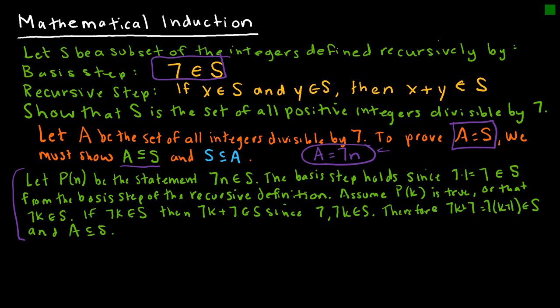I'm going to assume P(k) is true, which means 7k belongs to S. If 7k is an element of S, then 7k + 7 is an element of S, because 7 and 7k are both elements of S. Therefore, 7k + 7, which can be rewritten as 7(k+1), belongs to S. I've shown that P(k+1) is true, and therefore A is a subset of S using mathematical induction.